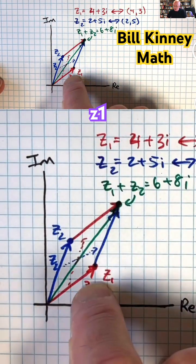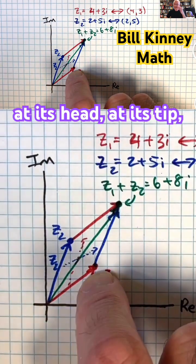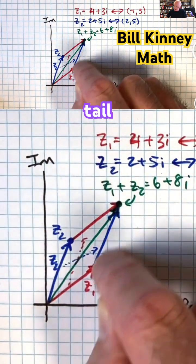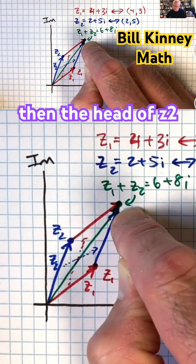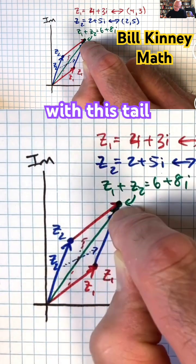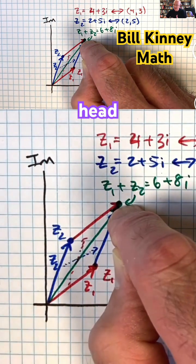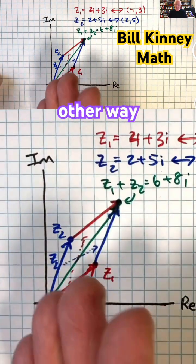If you take Z1 as an arrow here, this red arrow, and at its head, at its tip, put the tail of this blue arrow Z2 translated over here, then the head of Z2—we've done head-to-tail, this head goes with this tail—is going to be at the head of the sum in green here, Z1 plus Z2. Or I could do it the other way.